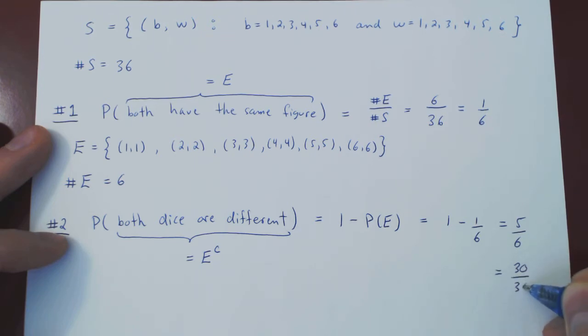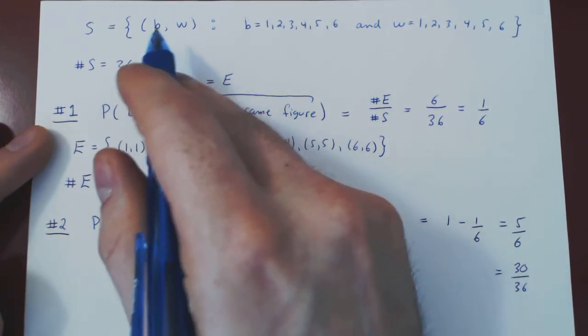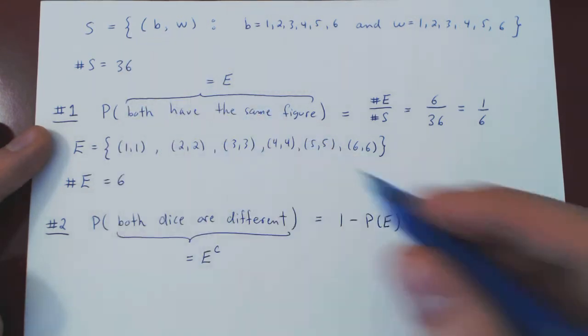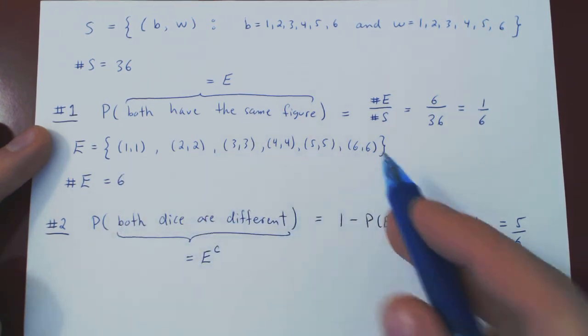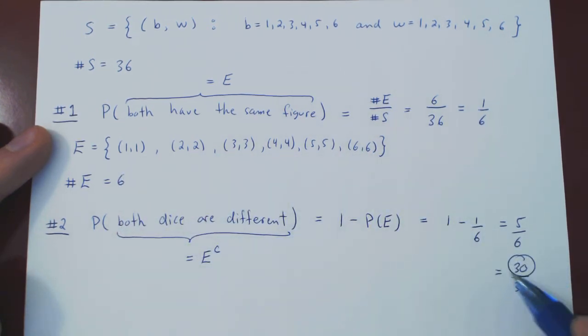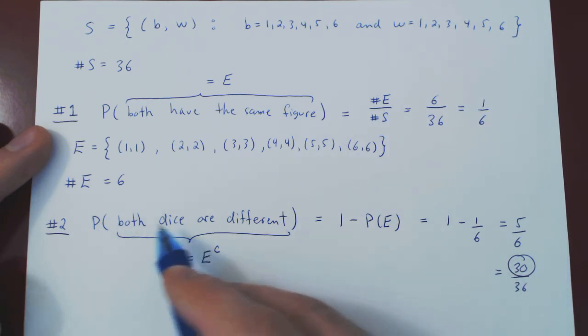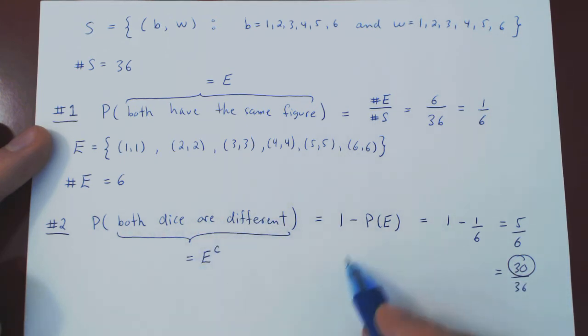Because if you think of it, multiply top and bottom by 6, this gives you 5 times 6 is 30, so 30 out of 36. So if you had counted directly every single pair where the numbers are different, you would have counted 30 different pairs. And that's way too inefficient. Whenever you have a complicated event, use the complement rule. And that's it.